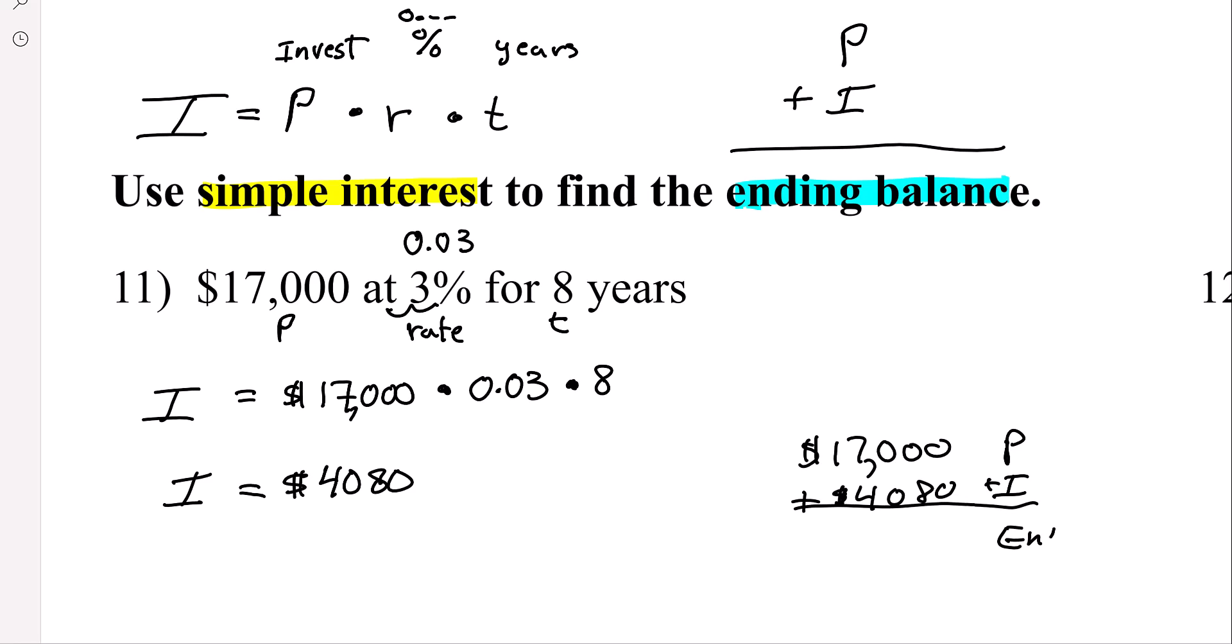And when we're done, we have the ending balance. 7 plus 4 is 11, carry the 1. So our ending balance is $21,080.